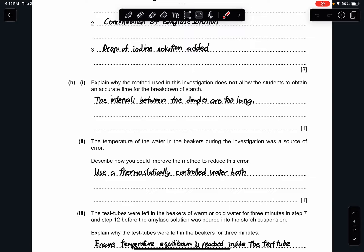For part 2, the temperature of the water in the beakers during the investigation was a source of error. Describe how you could improve the method to reduce this error. The keyword here is the temperature of the water. If you have been practicing a lot, you know that the obvious answer will be using a thermostatically controlled water bath. If you put water bath, you still get it wrong. You must have thermostatically controlled. You must have a machine that helps to control the particular temperature and it must remain constant.